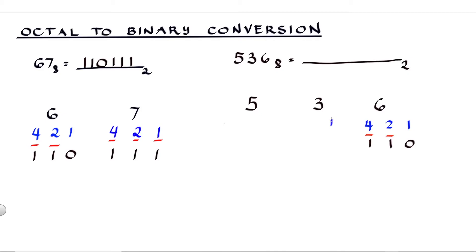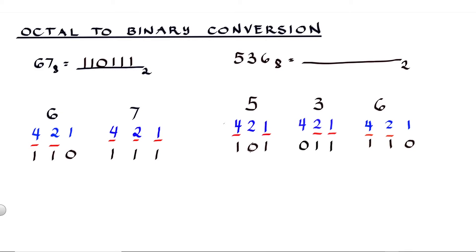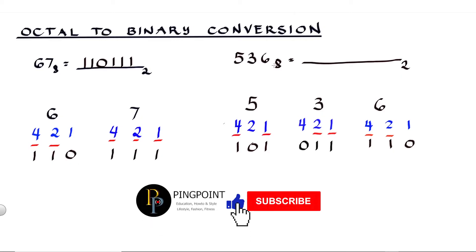Moving to the next digit: for 3, we have 1, 2, and 4. Since 3 is the sum of 2 and 1, we don't use 4 — so this is 0 — we use 2 — so this is 1 — and we also use 1 — so this is 1. For 5: we have 1, 2, and 4. Since 5 is the sum of 4 and 1, 4 is 1, we don't use 2 — so this is 0 — and we do use 1 — so this is 1.